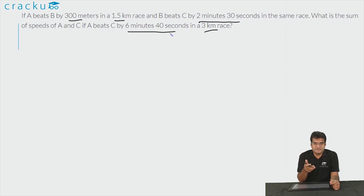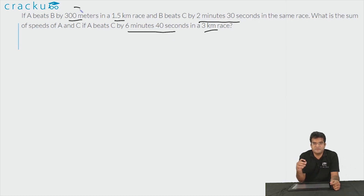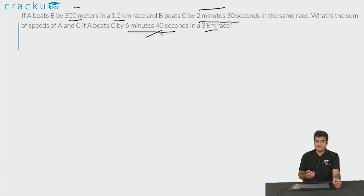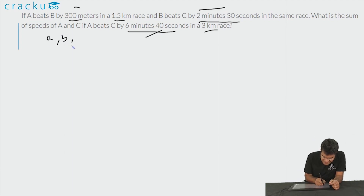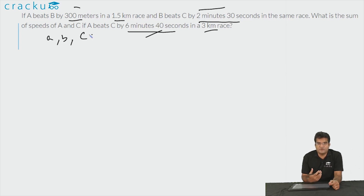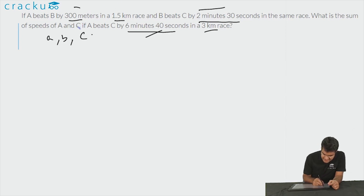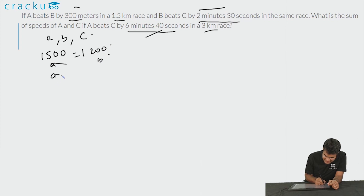Let the speeds of A, B and C be small a, small b and small c. We have three equations and three unknowns. A beats B by 300 metres in a 1500 metre race, so when A travels 1500 metres B travels 1200 metres. Therefore a/b = 1500/1200 = 5/4. This is the first equation.